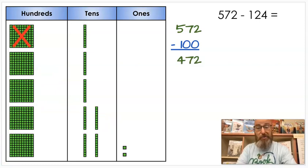Next, just like before, I subtract my tens. What do I have in the tens place of 124? I have a 2, which stands for 20. So I'm going to subtract 20, I'm going to cross out 2. Still have 400, but instead of 70, I have 10, 20, 30, 40, 50. Still have 2 there. So I have 452.